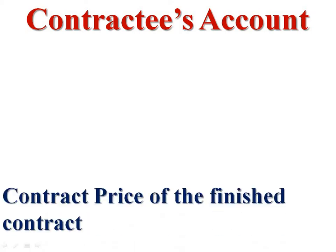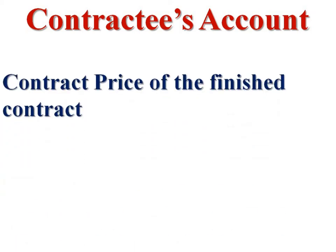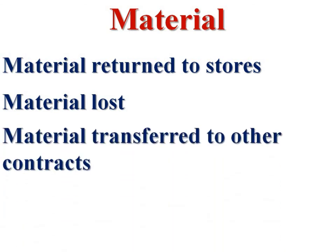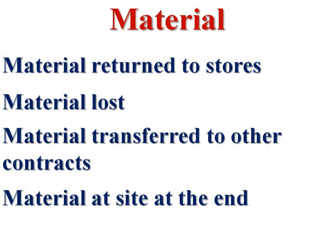On the credit side, the contract price is to be credited. For materials on the credit side: closing material, material transferred to other contracts, materials returned to stores, and materials lost during the year are all to be credited in the contract account. Materials transferred to other contracts — each contract will transfer materials as needed.